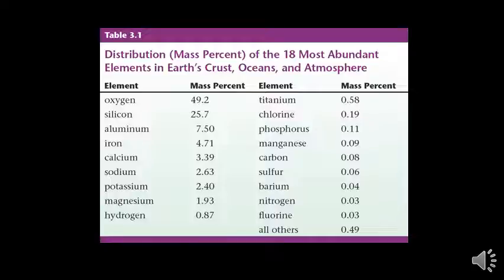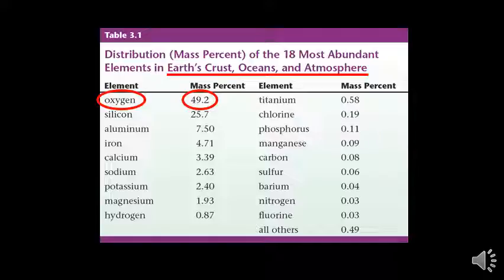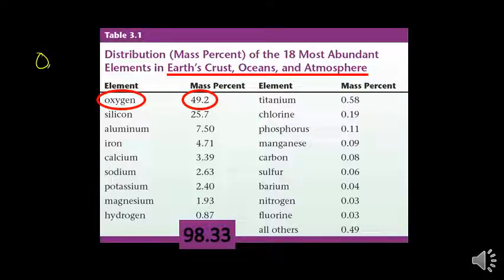If we look at the Earth's crust, oceans, and atmospheres, oxygen in some form makes up 49.2% of all three of those things. And when I say oxygen in some form I could mean O2 like the air we breathe. You can find it in water. You can find it in carbon dioxide. I could keep going. But oxygen in some form is found the most if I combine the crust, the oceans, and the atmosphere.